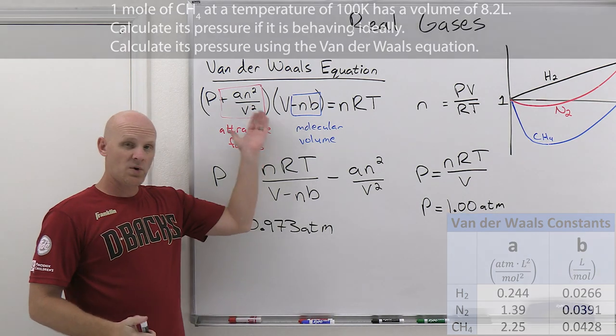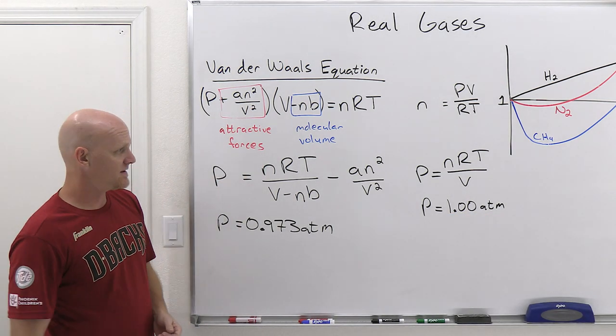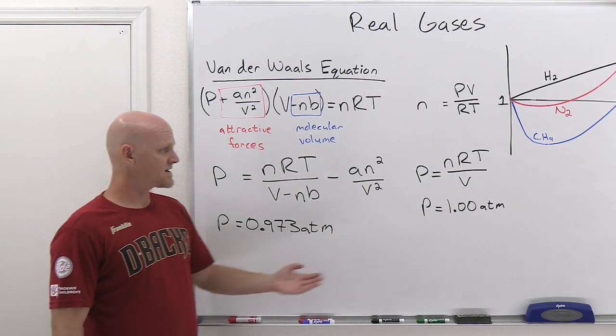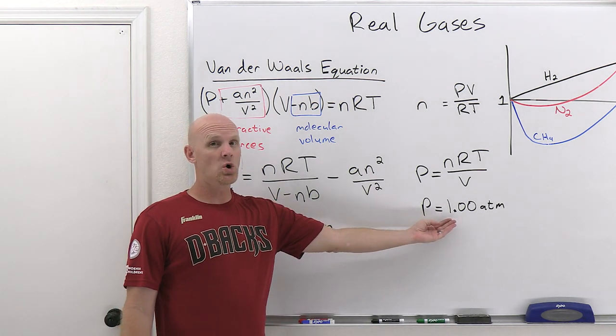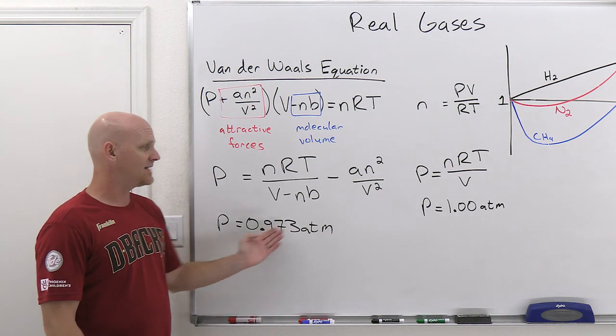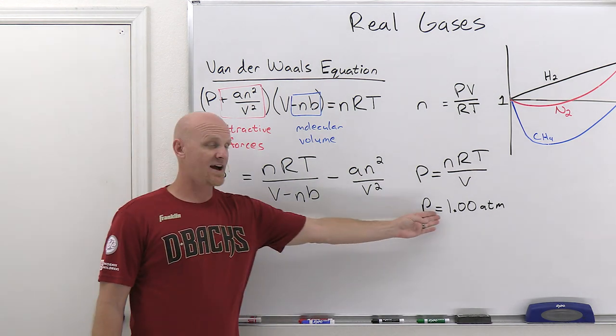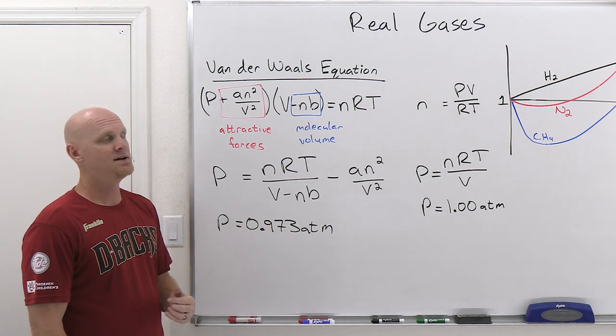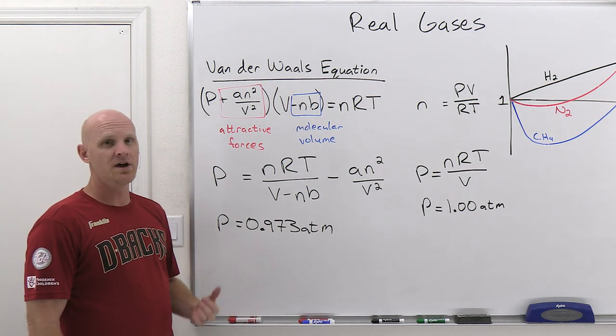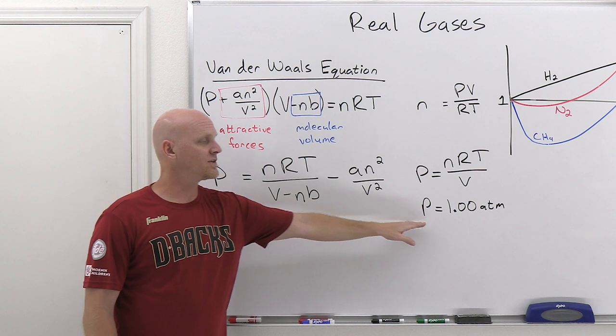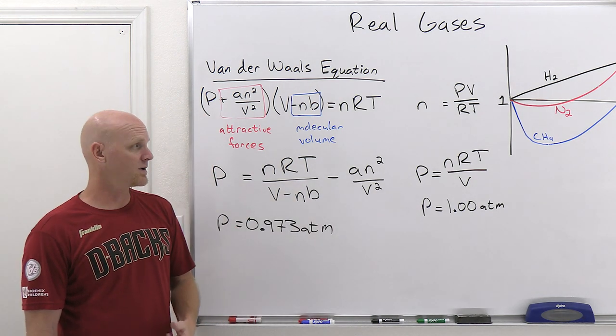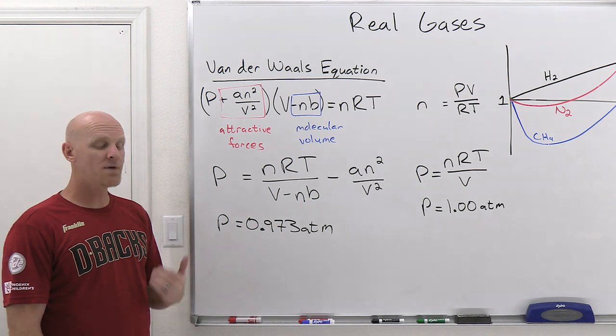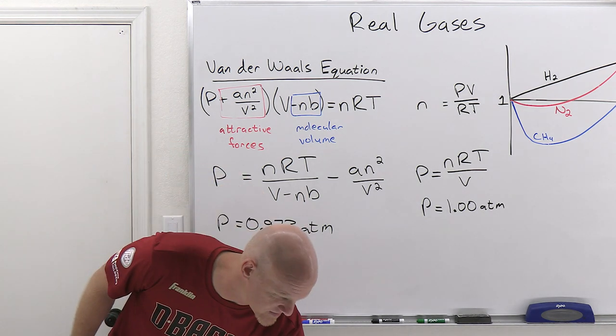Typically the van der Waals equation is a little more accurate than the ideal gas law equation, especially as you start getting to the extremes. In this case, we're actually at a fairly low pressure here of one atmosphere. The ideal gas law is not too far off from van der Waals, but we'd expect this to be just slightly more accurate. If we get to higher pressures, we'd find out that the van der Waals and the ideal gas law are probably going to deviate a little more, and the van der Waals is probably going to be the more accurate of the two by a fair amount.